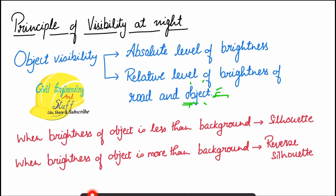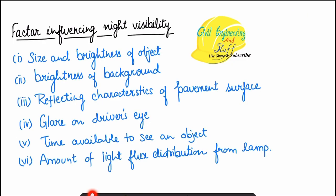So the overall principle of visibility is that light should be incident over objects for better visibility, and there should be ample light all around the surroundings. For street lighting on the road, the first factor influencing night visibility is the size and brightness of the object. If the object is opaque, a large amount of light source is required. If it is darker, an even higher quantity of light is required, while if the object is retro-reflective, a lower-power and smaller light source is sufficient.